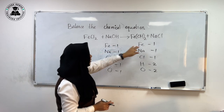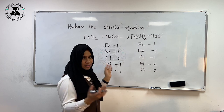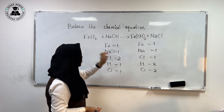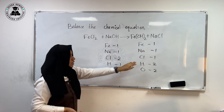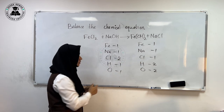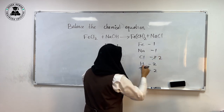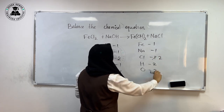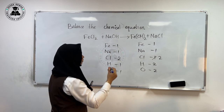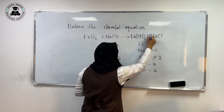Iron is 1 on both sides, so it is already balanced. Sodium is also 1 on both sides. When we come to chlorine, there are 2 on the left hand side and 1 on the right hand side. So we have to make the right hand side 2, and we put 2 as a coefficient there.